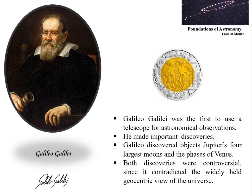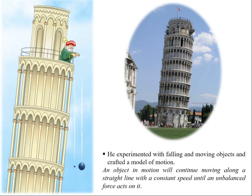Galileo Galilei was the first to use telescope for astronomical observation. He made important discoveries such as Jupiter's four largest moons and phases of Venus. Both discoveries were controversial since they contradicted the widely accepted geocentric view of the universe. He also experimented with falling bodies, moving objects, and crafted a model of motion. He stated that an object in motion will continue moving along a straight line with a constant speed until an unbalanced force acts on it.